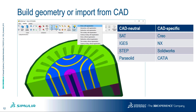Opera's Modeler contains the ASYS solid modelling kernel from Dassault Systèmes, which can be used to generate complex parametric models. Alternatively, it can read and write many different formats of CAD file, both neutral formats and CAD-specific. These include SAT, Parasolid, CATIA and SOLIDWORKS.